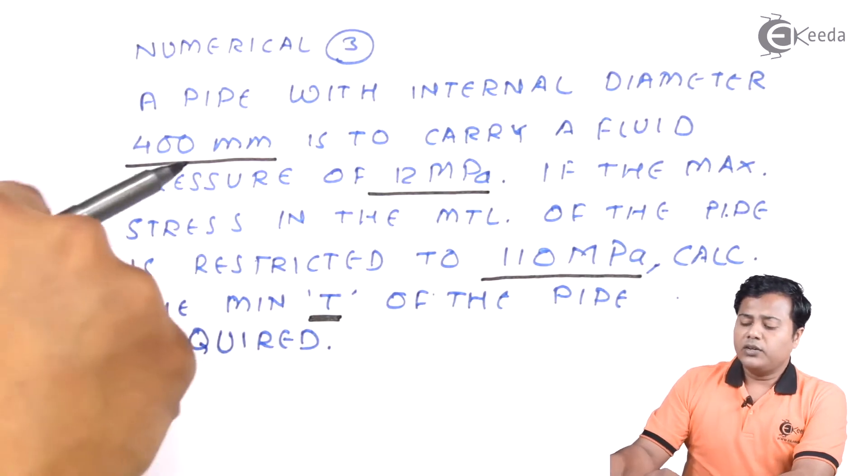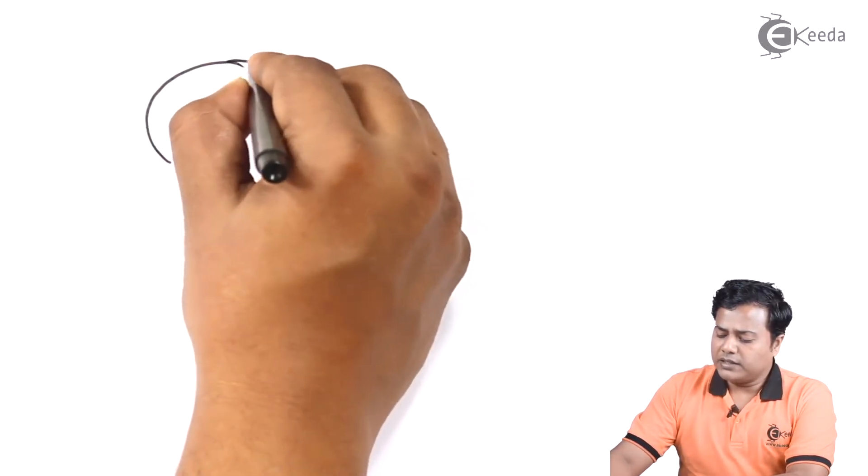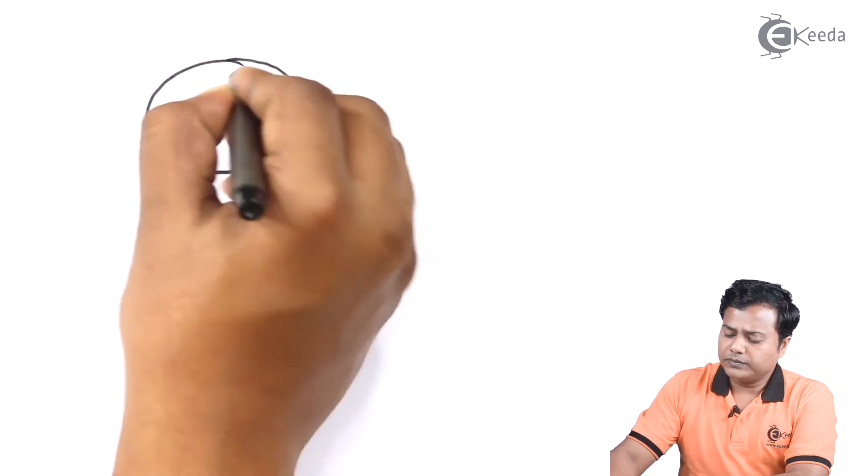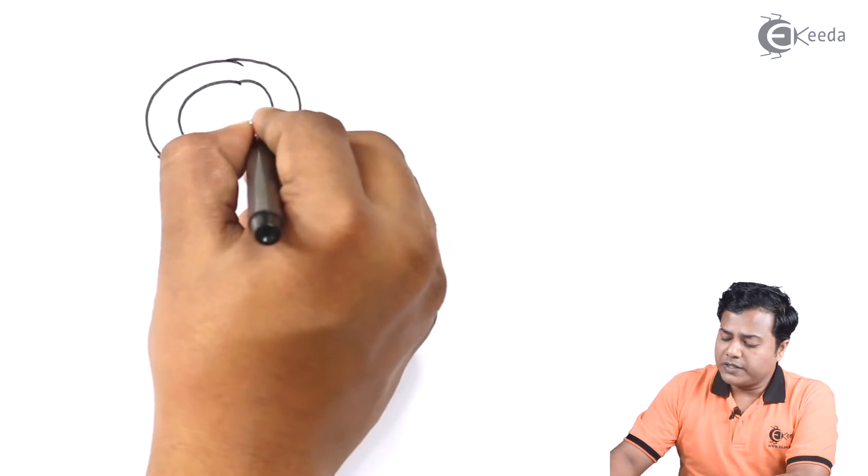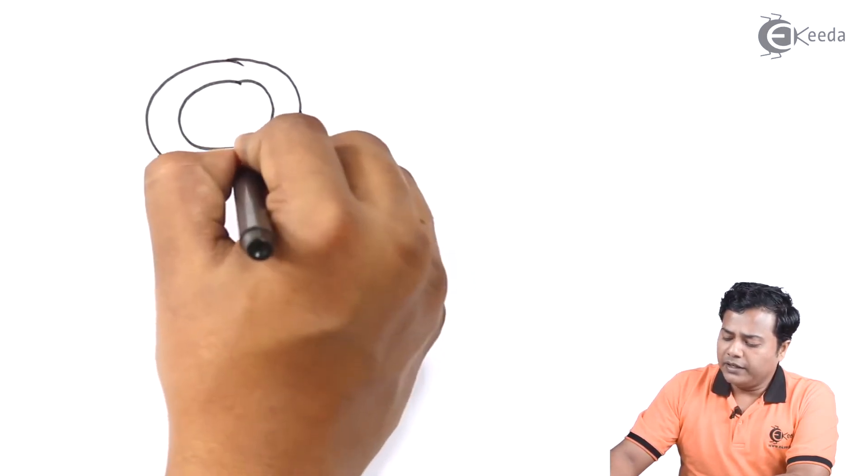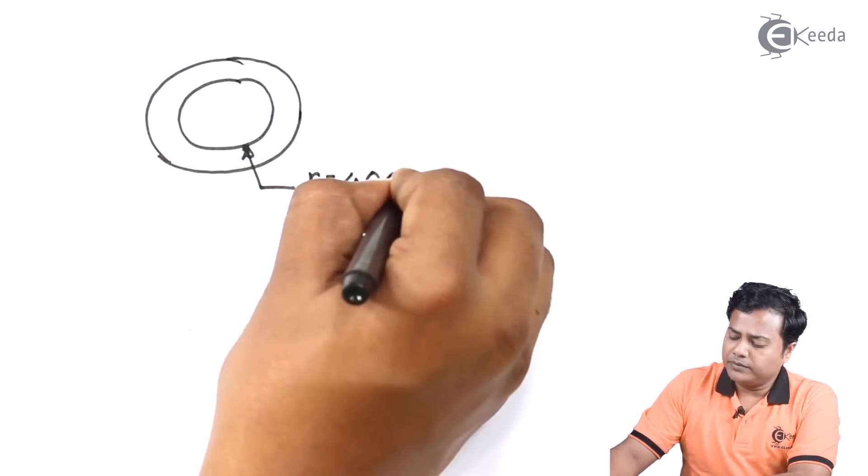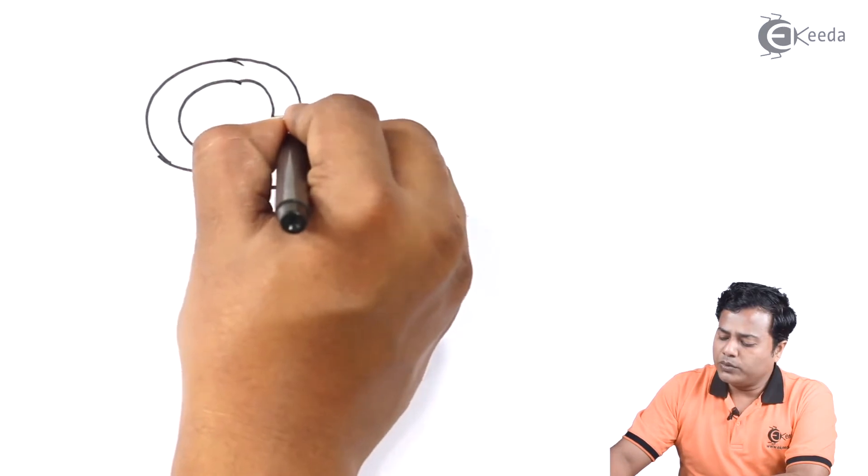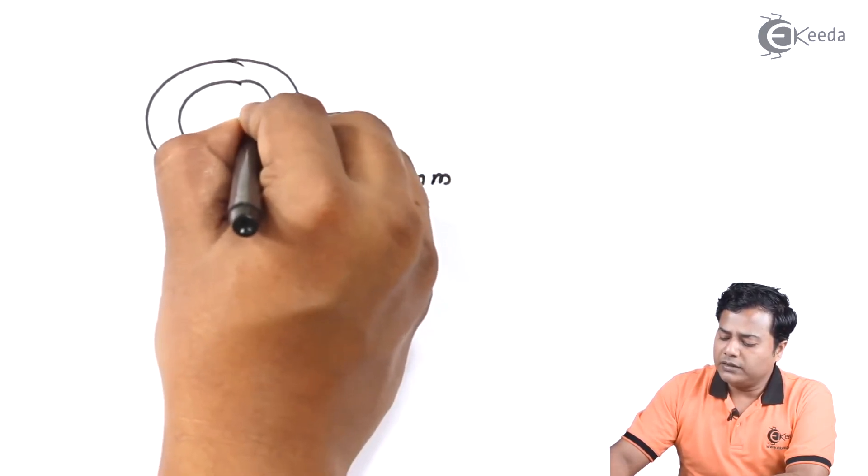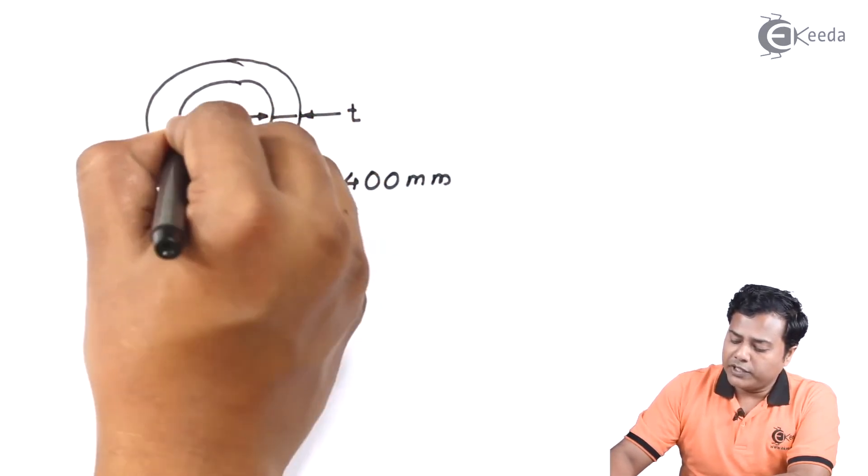Let us quickly draw the diagram and then write down the given data. So pipe looks like somewhat like this. Where we have been specified the internal radius, small r of course, 400 mm. We have to design this factor, which is its thickness. We have been given the internal pressure.